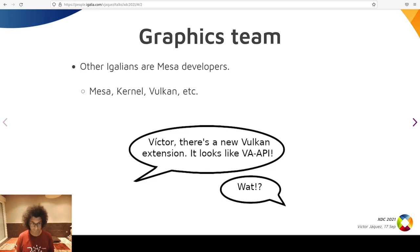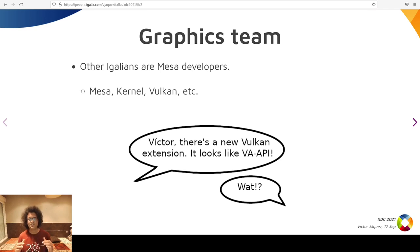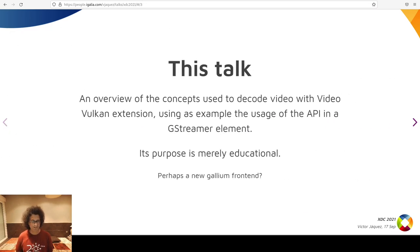One day, they approached me and told me that they became aware of a new extension in Vulkan for video decoding and encoding, and it looked similar to VA-API, which surprised me. I barely know OpenGL fundamentals, and I was hoping to dodge Vulkan for a couple of years more. But they added: we want to know if what you have been doing all this time with GStreamer and VA-API can be done with these extensions. One consequence of that conversation are these slides.